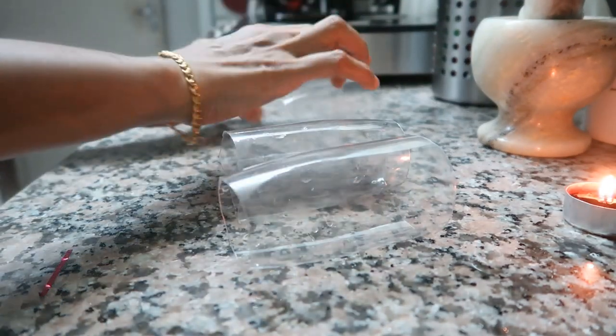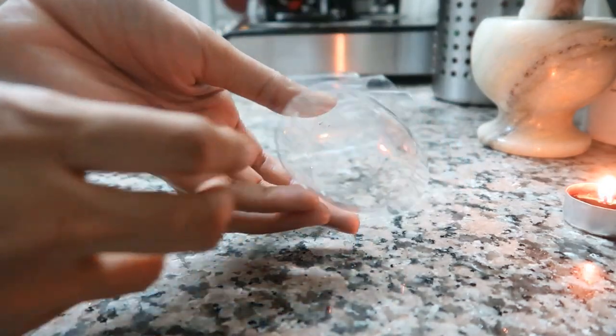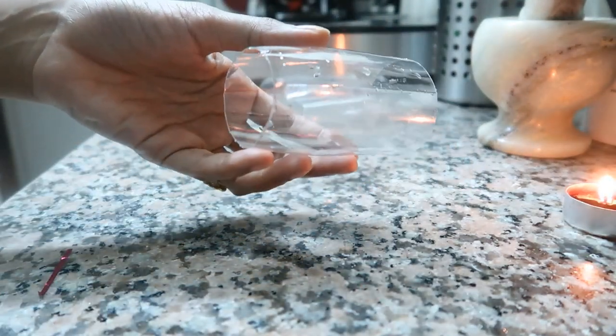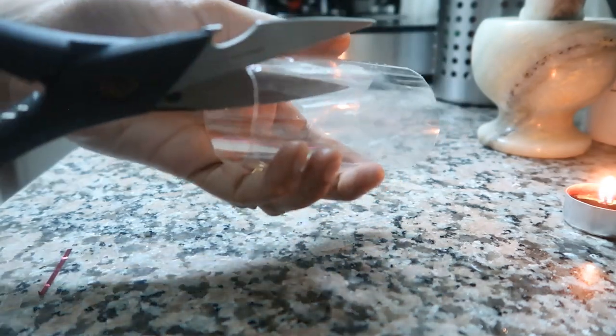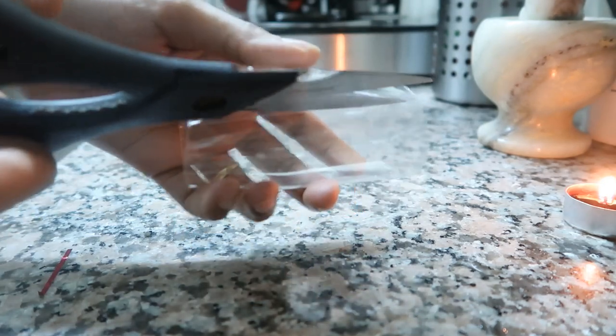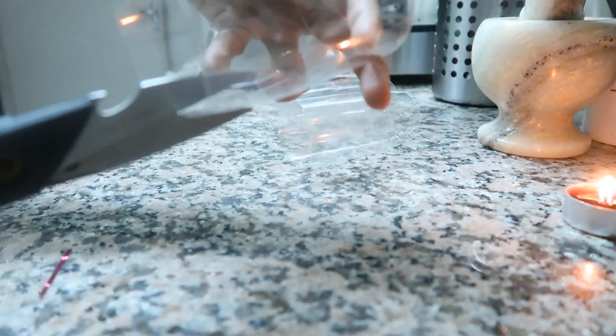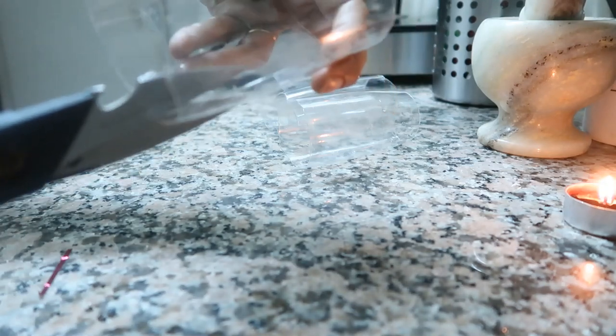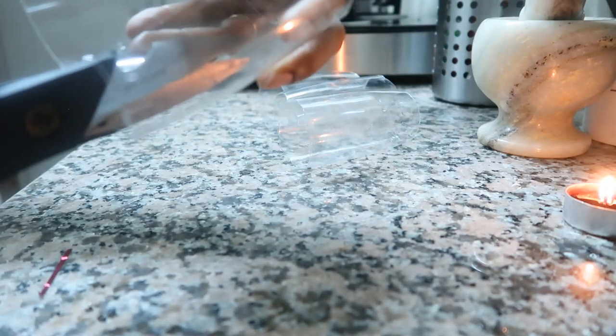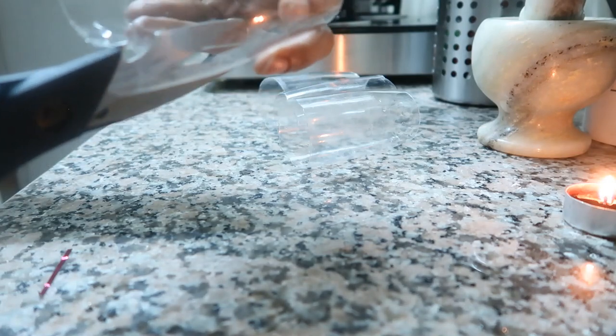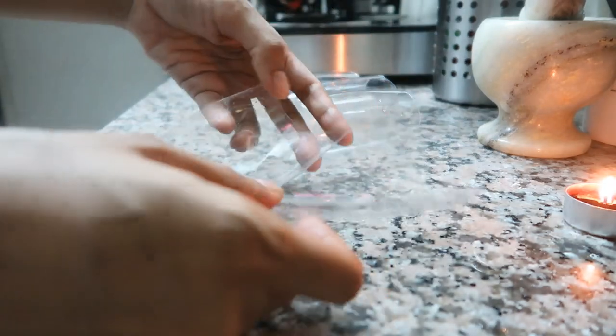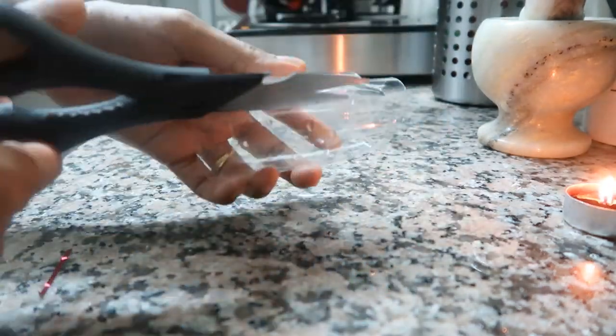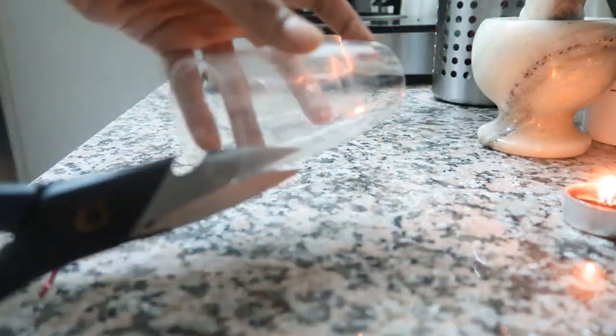So here it's ready. Now next we will be cutting it into two with the help of the scissors. This isn't harder so we can do it with scissors. Make sure it's of equal sizes and repeat the process for all the bottles.